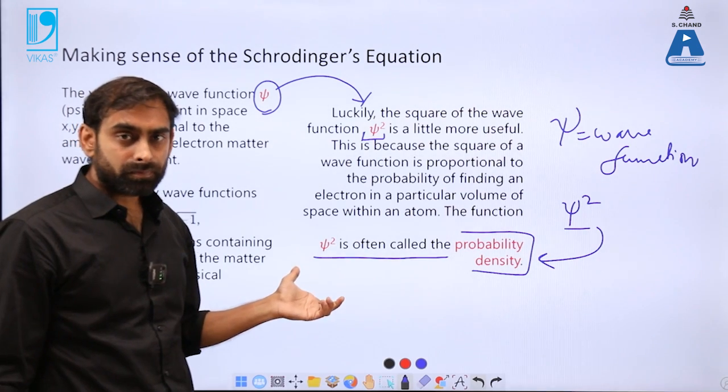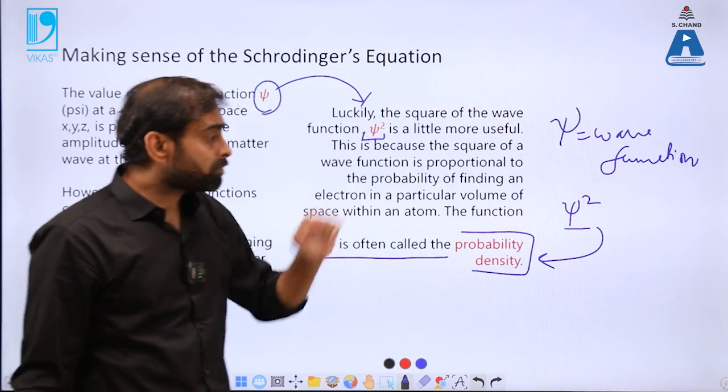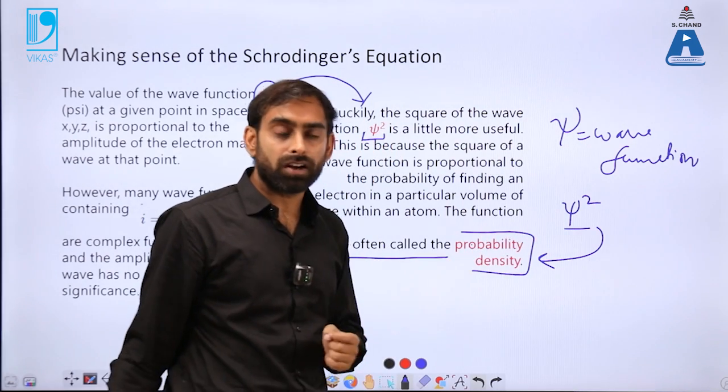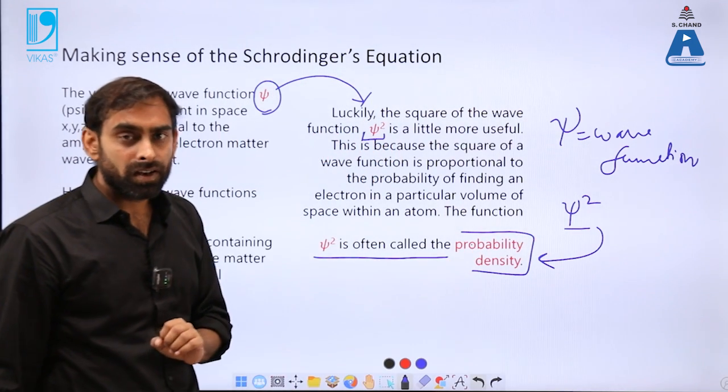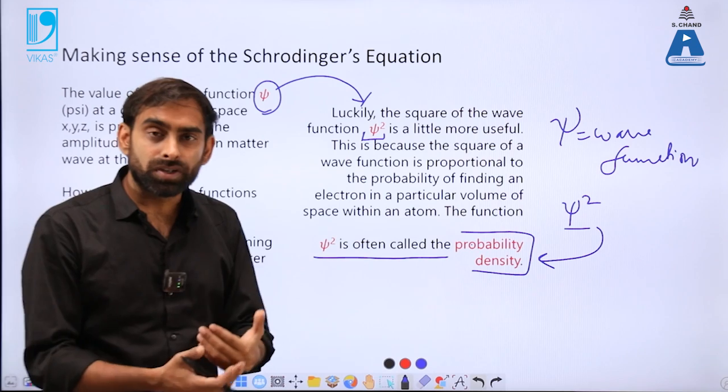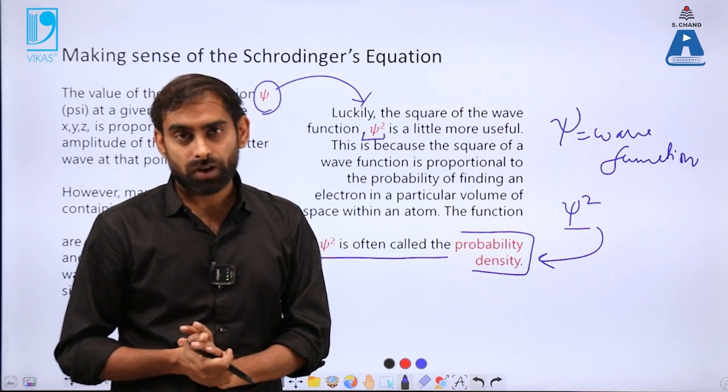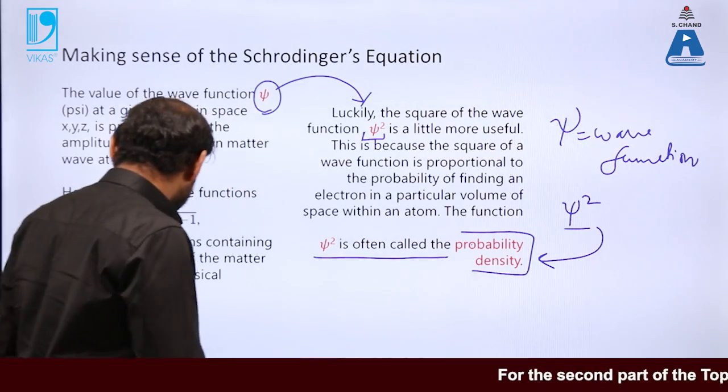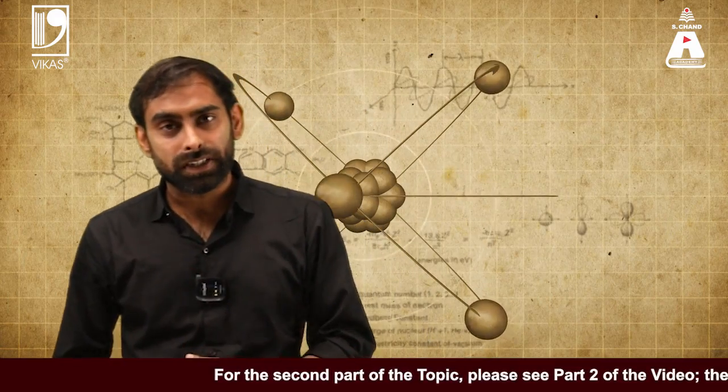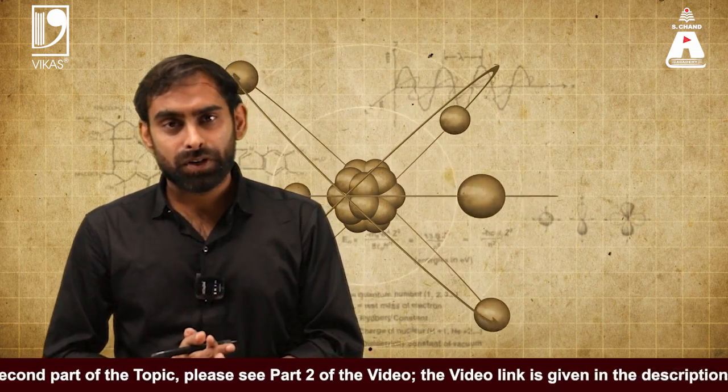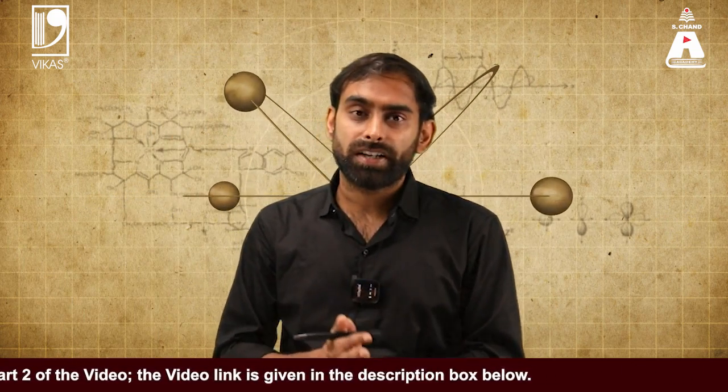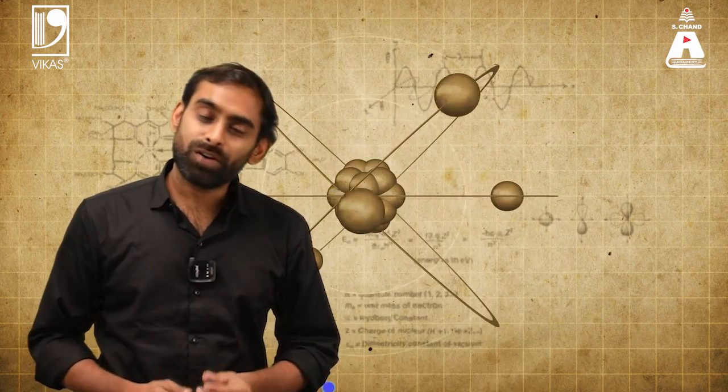If you can use Schrödinger equation and transform it into another form where you can calculate ψ², you will be able to deduce the exact shapes of electron clouds which are present inside your orbits. We will talk more about this in the second part of the video. This was the first part where we just looked at the equation. In the second part, we are going to look at the actual shape of orbits and orbitals deduced from the ψ² wave.